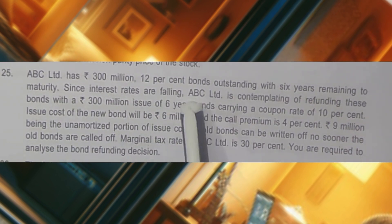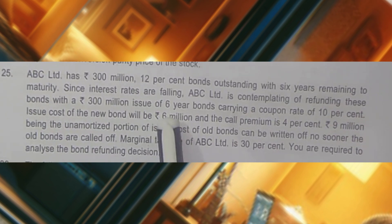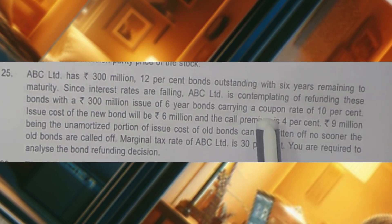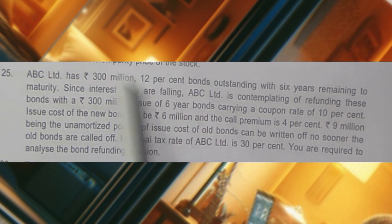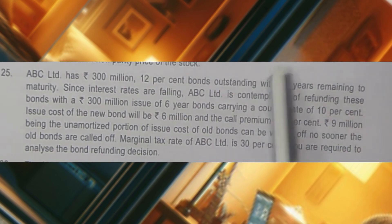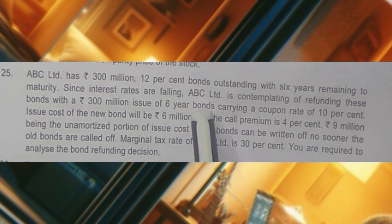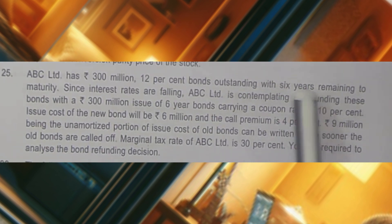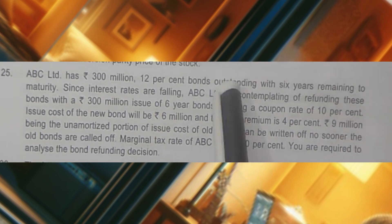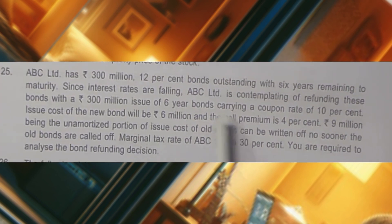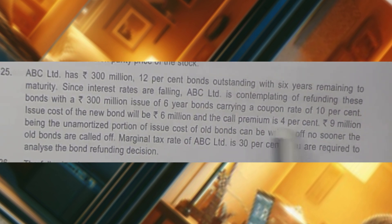The question says that interest rates are falling, so ABC is thinking of refunding these bonds with 300 million, which are also having a 6-year bond and a coupon rate of 10%. The existing bonds are having 12% interest rates, but the new bonds are carrying 10% interest rates. There is a savings of 2% for the same 300 million amount, and the life of the bond is also 6 years. For issuing the new bonds, there is an issue cost of 6 million rupees. And the company has to pay a call premium of 4%.